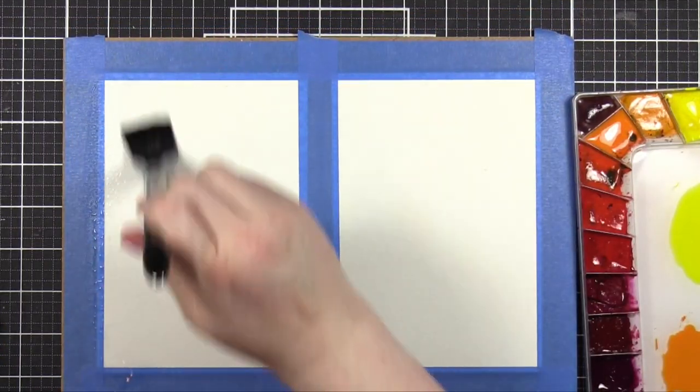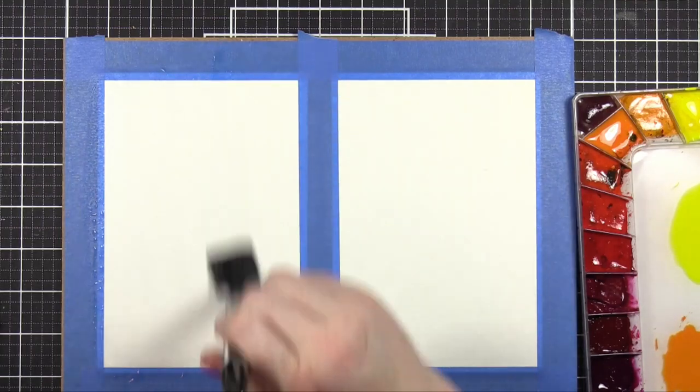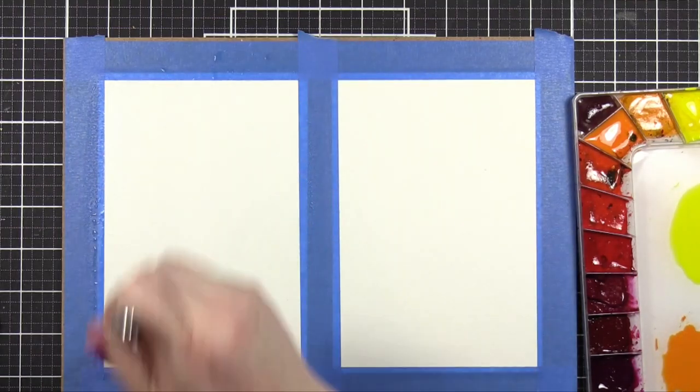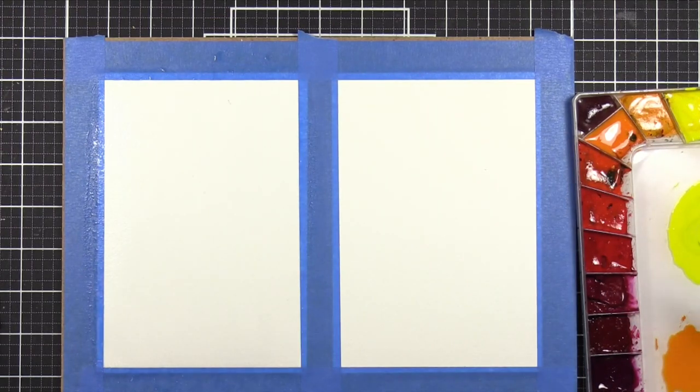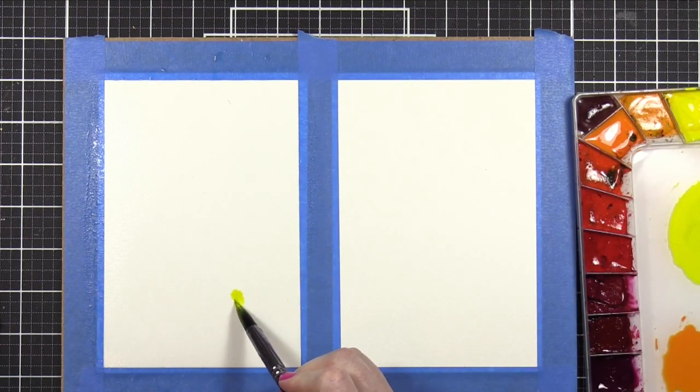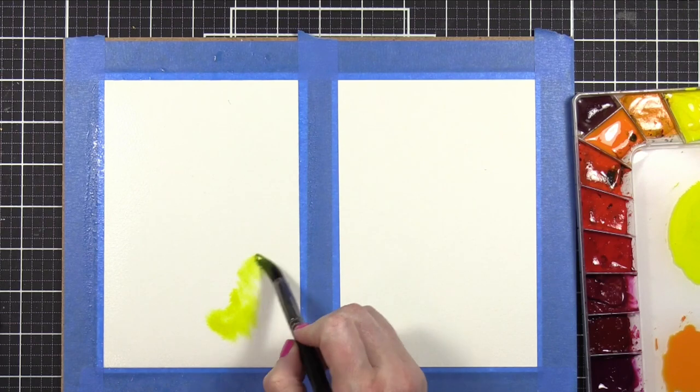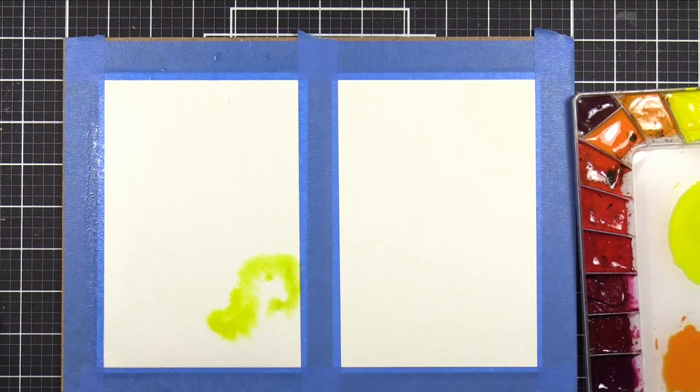I'm going to wet my watercolor paper, saturate that with water, so that I can do a very soft background. I don't want any harsh edges on this background. Using a large paintbrush to drop in some of that yellow color, and just dabbing it around.